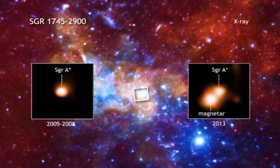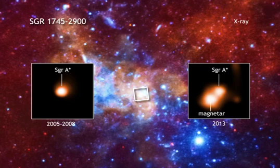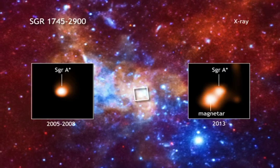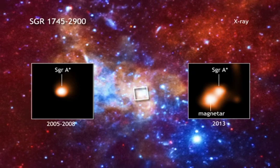Since its discovery two years ago, when it gave off a burst of X-rays, astronomers have been actively monitoring SGR 1745-2900 with Chandra and the European Space Agency's XMM-Newton.